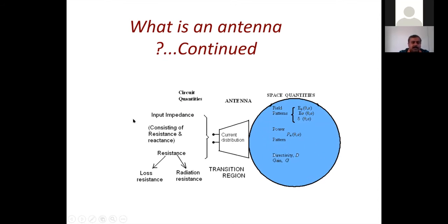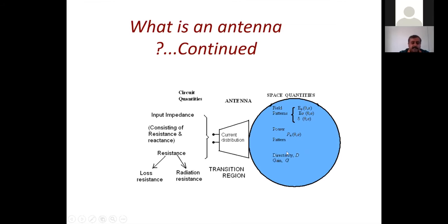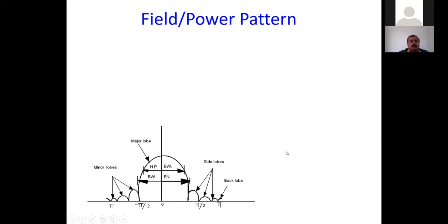An antenna converts your electrical signal to radio waves. Transmission lines or feeder lines are connected to the antenna element. A certain current distribution takes place on the antenna element, and because of this current distribution, the fields are converted to wireless radio waves. To match the electrical quantity and the field quantity, fictitious parameters such as radiation resistance are introduced. Space quantities consist of different field patterns: power pattern, directivity, gain, and polarization.